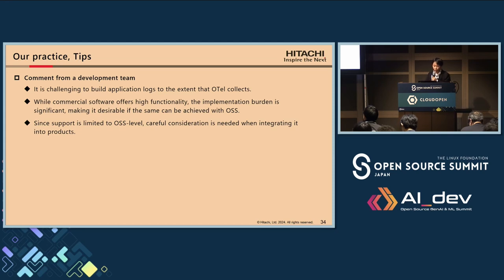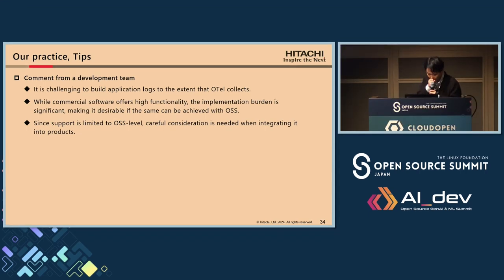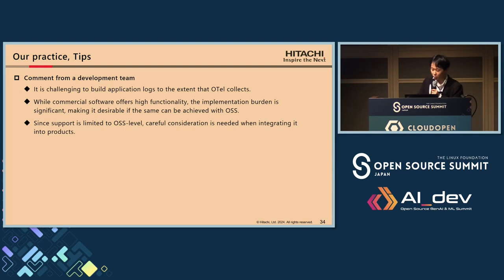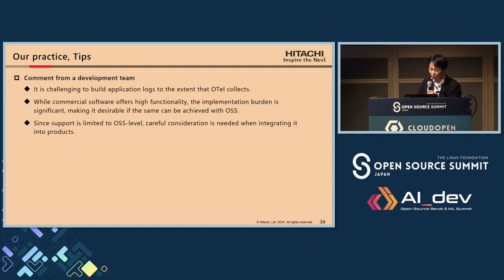Let me share some feedback from development teams on our activity. They mentioned that implementing equivalent logging functions within the application would be very challenging compared to collecting data with OpenTelemetry. Regarding observability, while there are commercial software options available with advanced features, these solutions often have a high introduction cost. Using open source software to achieve only the necessary functions is better. However, since support is limited to the OSS level, caution is needed when integrating these tools into products.